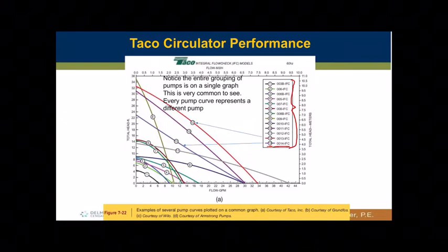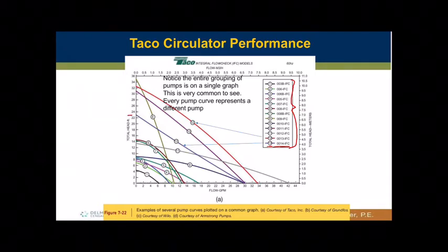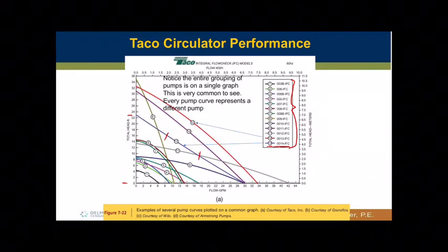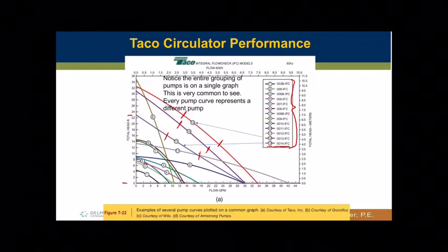The 0014 pump will do about 23 feet of head with no flow rate, and at maximum flow it can do almost 30 gallons a minute against no resistance. Where this pump would normally be used — and really this applies to all pumps — you'd like to operate in that middle-third range of the curve. That's really where you get the most efficiency.